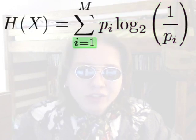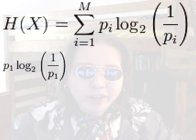You'll see that underneath the sigma, it says i equals 1. That means we're going to start with the probability of symbol 1. We're going to evaluate the probability of symbol 1 times log base 2 of 1 over the probability of symbol 1. And we're going to keep doing this for every symbol's probability.